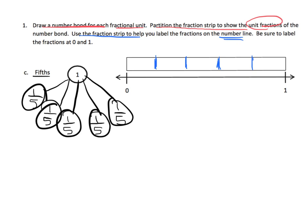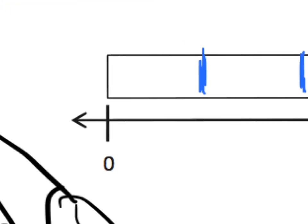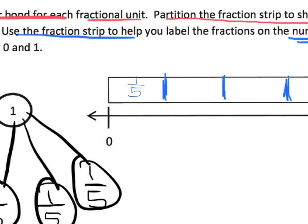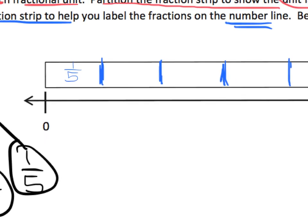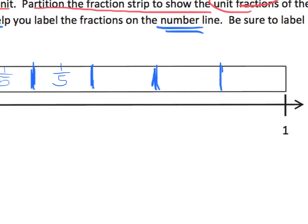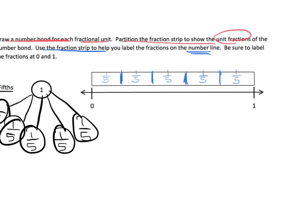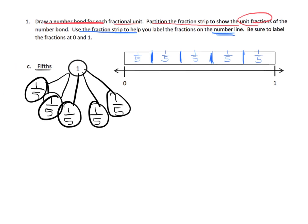I'm going to zoom in and label these pieces. Each section is one-fifth — labeling all five sections as one-fifth. There is our tape diagram correctly labeled with the fifths.